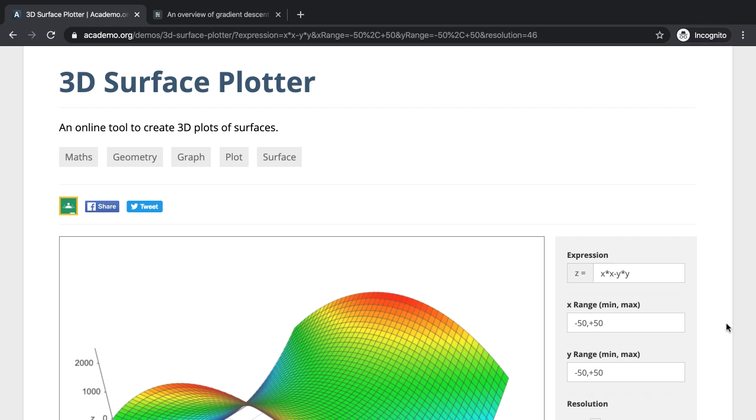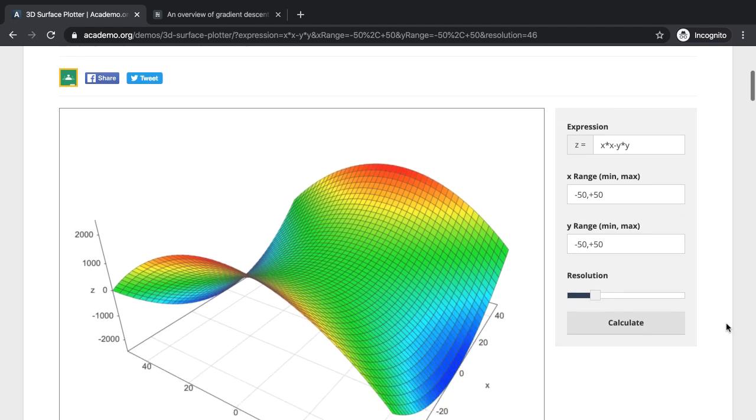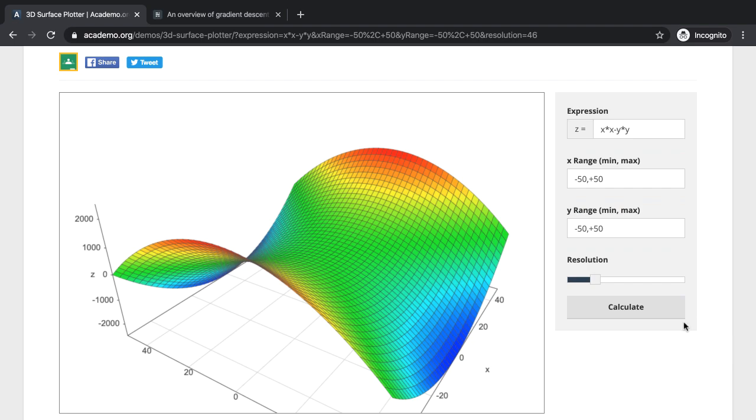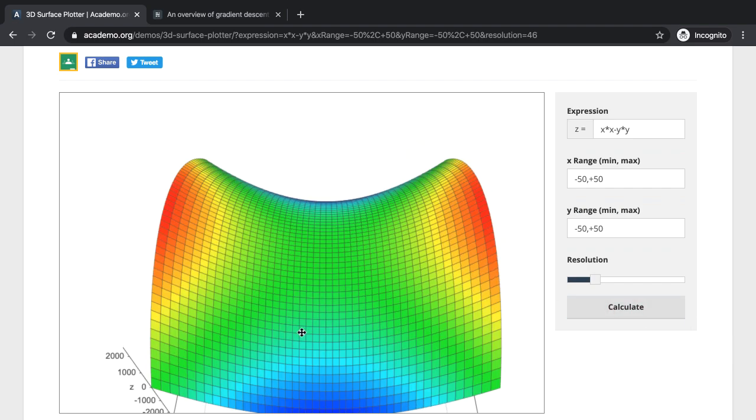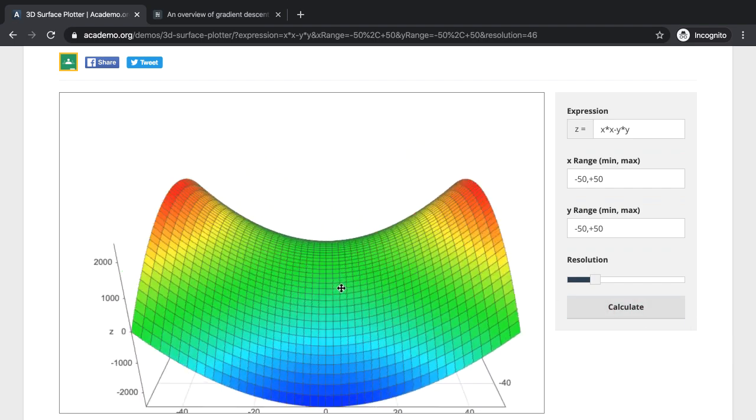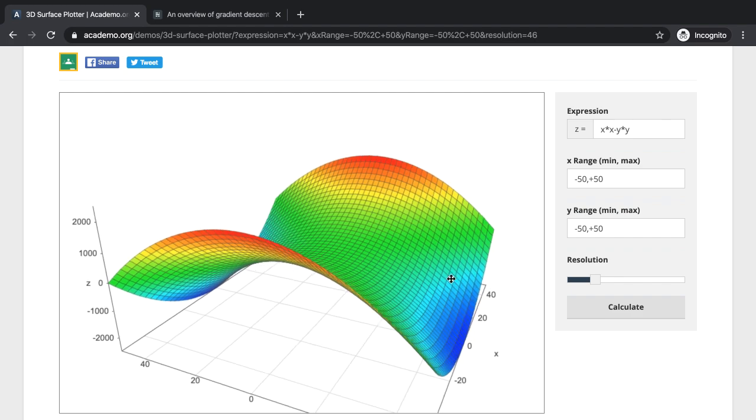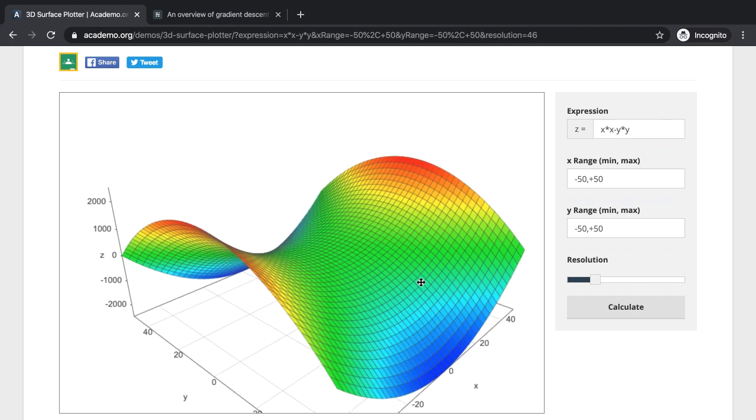I'm on a 3D surface plotter on acadmo.org. Cool site to plot out equations. This is a plot of z equals x-square minus y-square. Z is the value of the loss. And this loss has a minimum value of y tending towards negative or positive infinity.